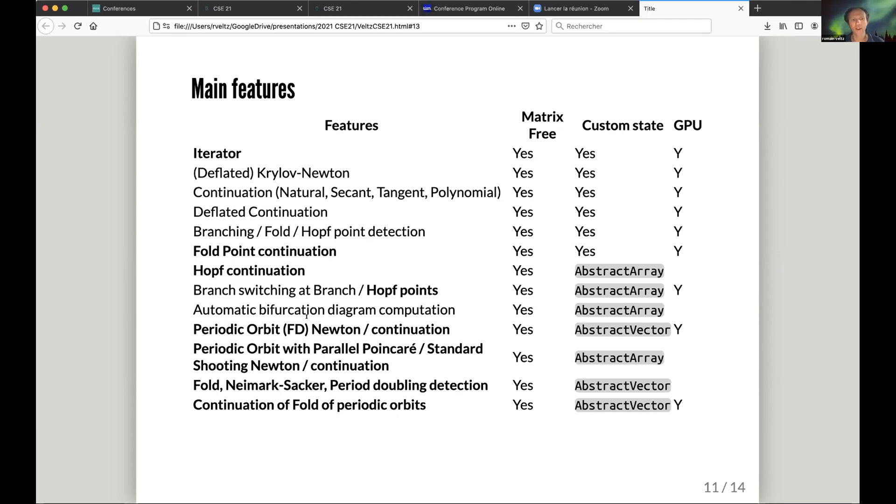Using three different methods: finite differences, parallel Poincare, and the standard shooting methods which are based on DifferentialEquations.jl. Then you can detect bifurcations, Neimark-Sacker, period doubling, and so on.